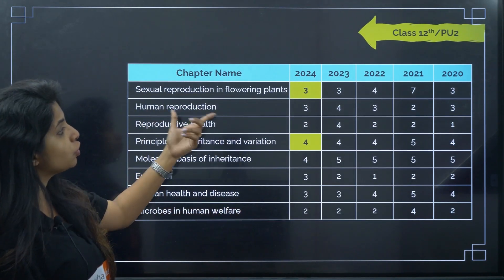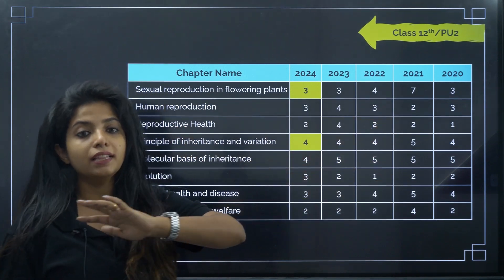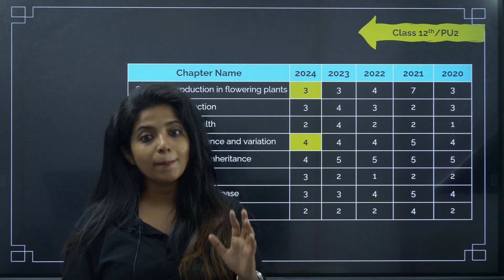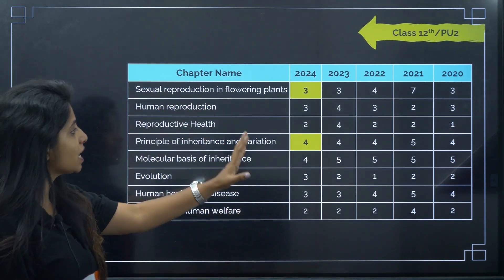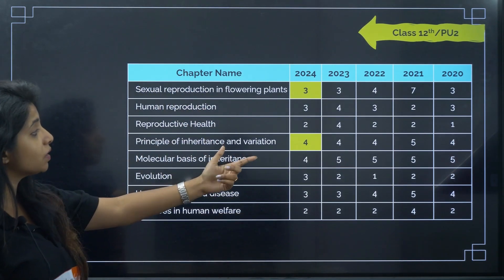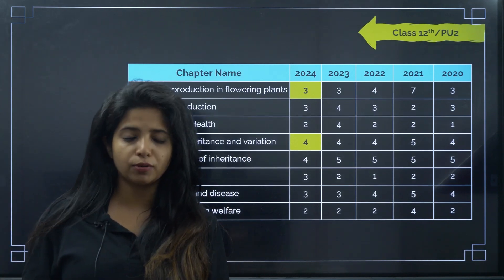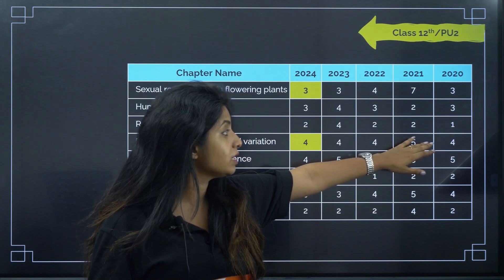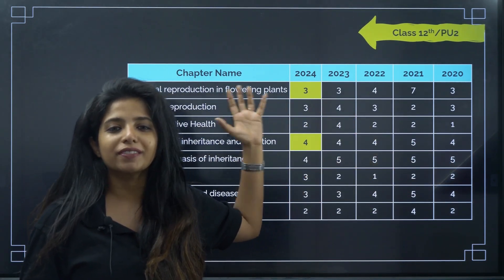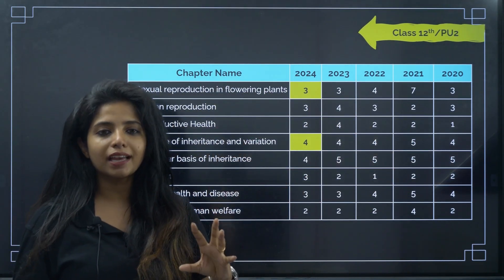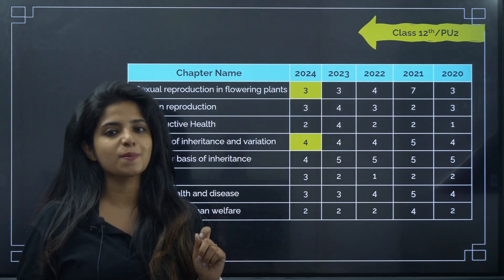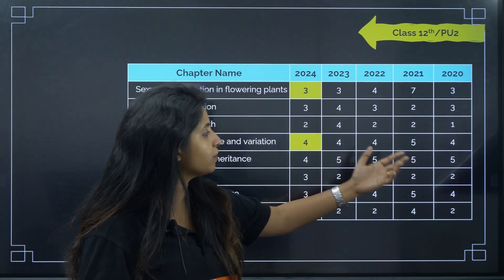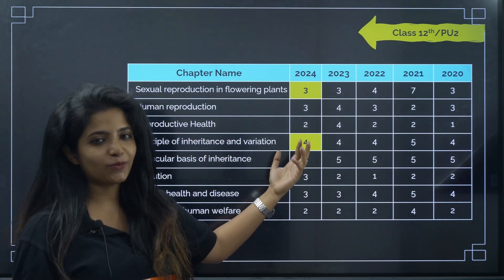Principles of inheritance and variation — a very important genetics chapter — has consistently had 4, 4, 4, 4, 5, 4 questions, maintaining that streak. Molecular basis of inheritance has gone 5, 5, 5, 5, 5, and then 4 — very consistent. These are chapters where studying will reliably earn you marks. They are promising chapters you should definitely focus on.